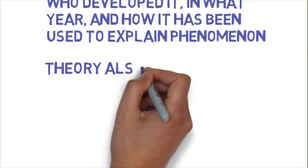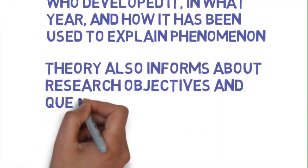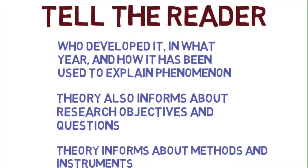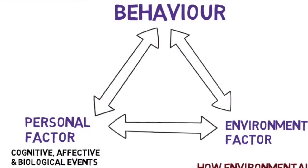Theory also informs about research objectives and questions. Theory informs about methods and instruments. See this example of how social learning theory informs research.